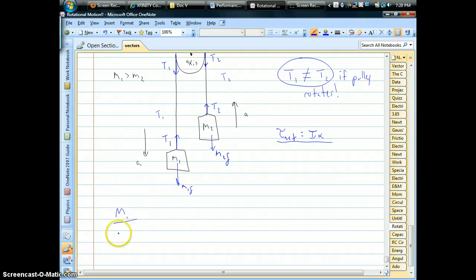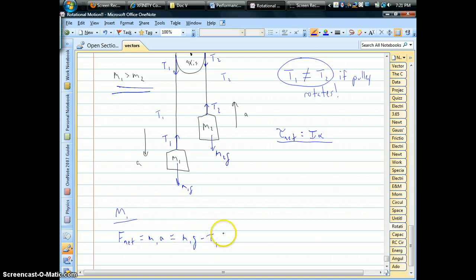Okay, so, for example, for mass one, if we make the assumption that mass one is bigger than mass two, then mass one is going to fall. So, that means we have mass one times whatever the acceleration is, and according to our force diagram, that's going to be equal to its weight minus whatever tension one is.